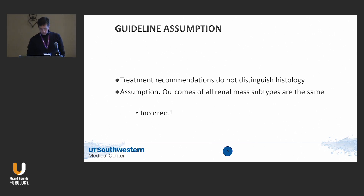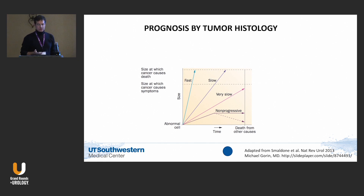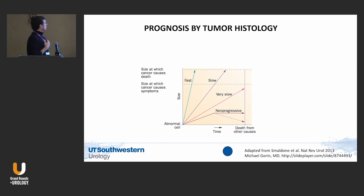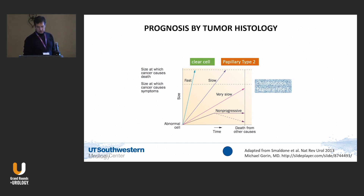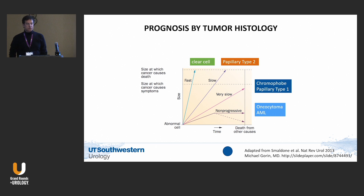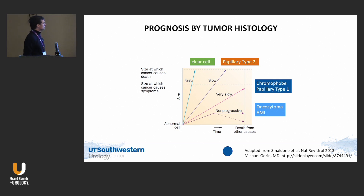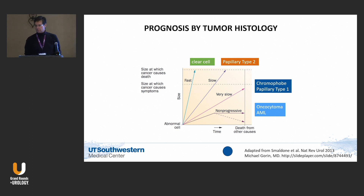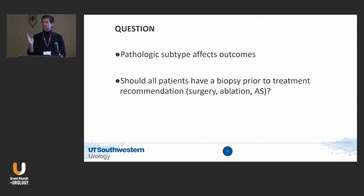The prognosis of patients with small renal masses depends on their tumor histology. Looking at size versus time, we know that clear cell and papillary type 2 can certainly be a threat to the patient's life within their life expectancy. But many chromophobes, papillary type 1s, and certainly oncocytomas and AMLs will never be a threat to the patient's life when diagnosed — and the average patient is diagnosed in their 60s or older. So we want to identify those tumors that would be a threat when a small renal mass is identified, knowing that many will never die of the disease.